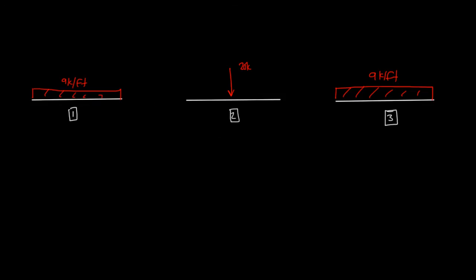Now I'm going to do the internal reaction diagram. Here we again treat these elements as fixed end beams, but this time we calculate the reactions just as we would in a statics problem — we calculate the end shears and end moments. For element 1, we have 90 kips going down, so we have 45 kips going up on the left and 45 kips going up on the right. We have a resistance moment on both sides of 75 kip-foot.